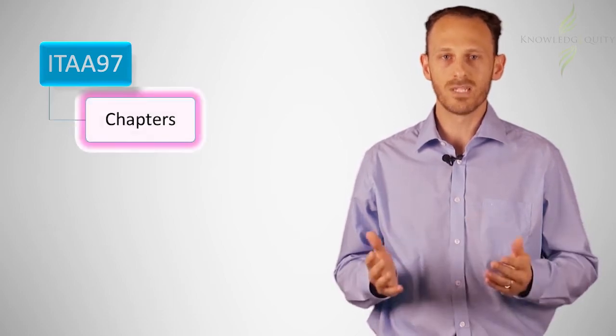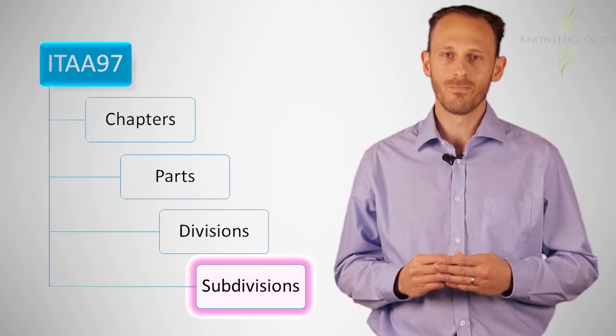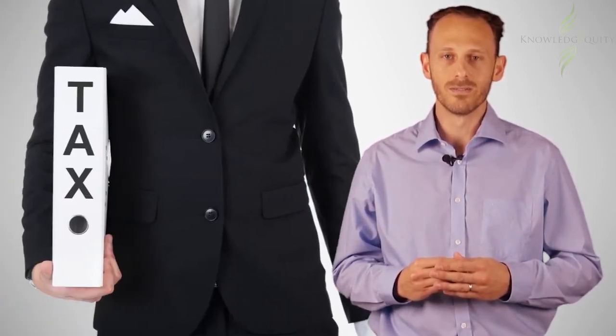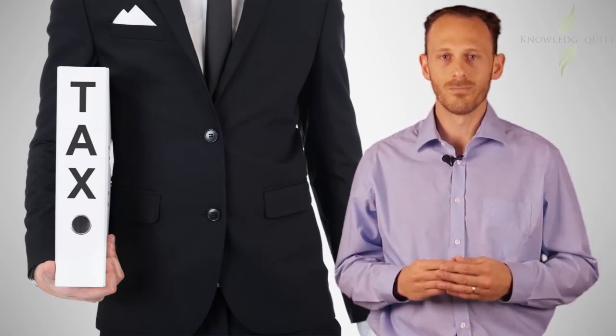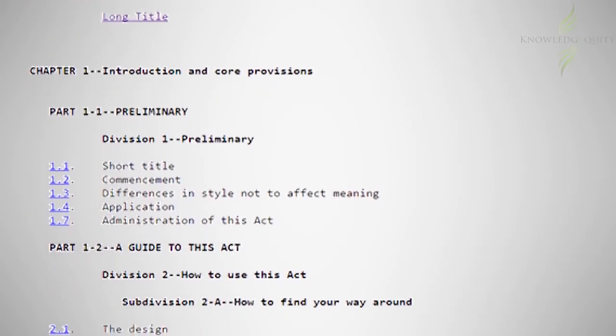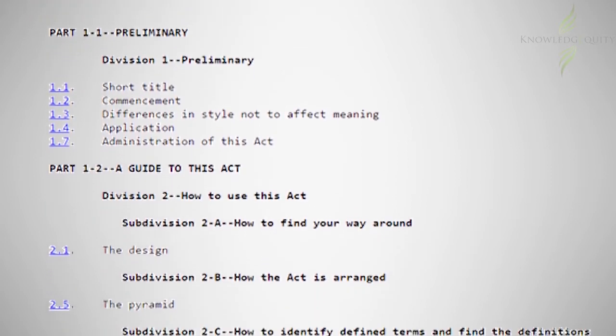The ITAA 97 has a hierarchical system with the following: chapters, parts, divisions, subdivisions. There are six chapters in the ITAA 97. Each chapter's title broadly describes what falls under it. For instance, chapter 1 is titled Introduction and Core Provisions, whereas chapter 5 deals with administration.